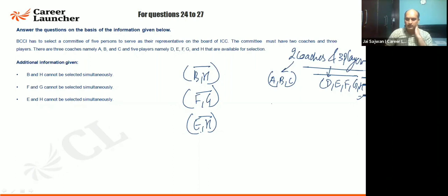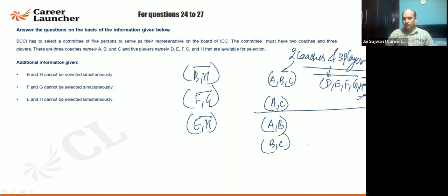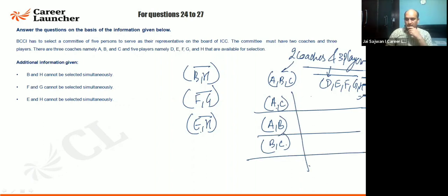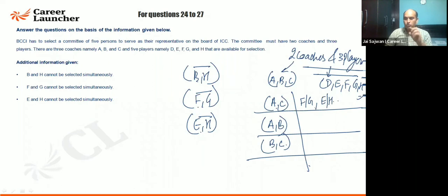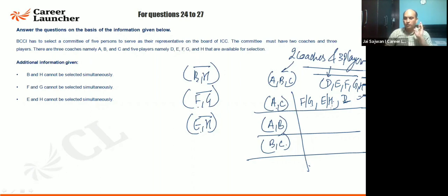Taking the first case where B is not selected, coaches AC are selected. There are no constraints triggered. D is certainly going to come. Out of F and G, one will be selected, and out of E and H, one will be selected. So four combinations come: F-E-D, F-H-D, G-E-D, G-H-D.